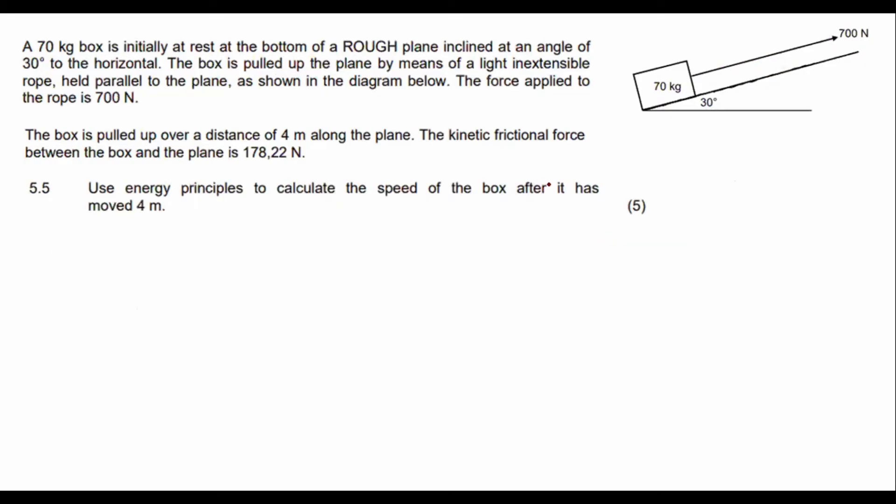OK, guys, so it says use energy principles to calculate the speed of the box after it has moved 4 meters. So energy principles, that means you can either use W net equals to change in EK, or you could use WNC equals to change in EK plus change in EP. Any one of those that you like, it doesn't really matter. You will get to the same answer if you know how to use the formulas. I'm going to use this one over here. It's more popular among students. OK, so 4 meters, 178.22. OK, so in W net, we need to look at our free body diagram again. Guys, remember how long we spent doing this a few months ago. We did W net so many times in our live events about a month or two ago. So for those of you that attended this, you should be really good at this right now.